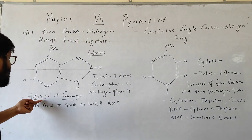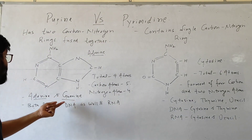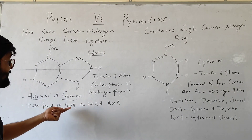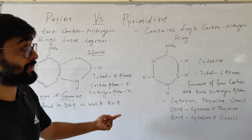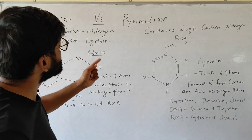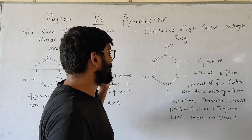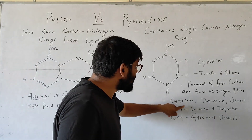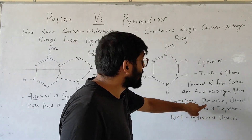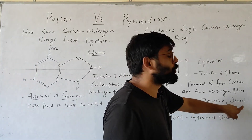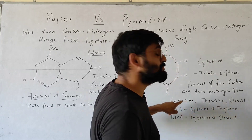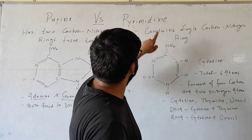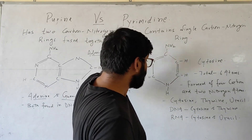Both adenine and guanine are present in DNA as well as RNA. In Pyrimidines, cytosine, thymine, and uracil are included — these three come under Pyrimidines.